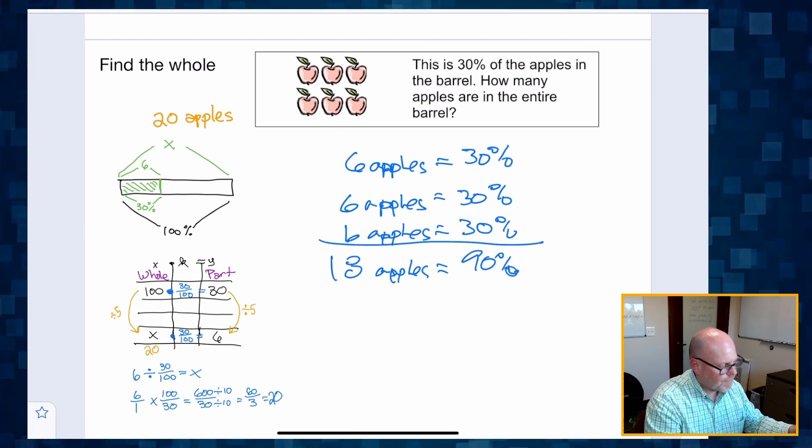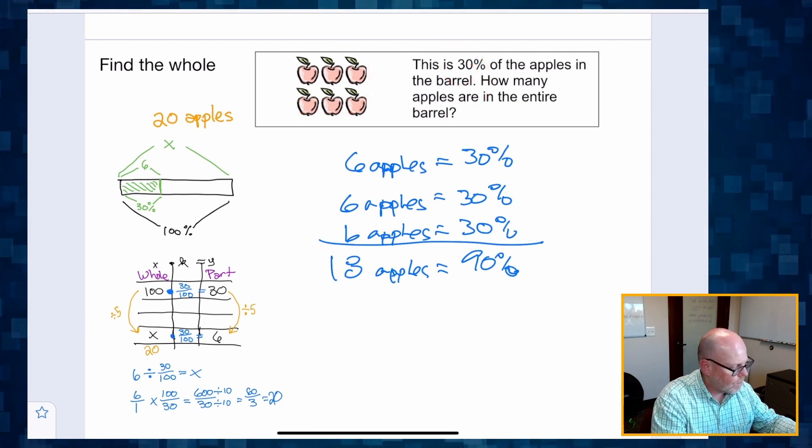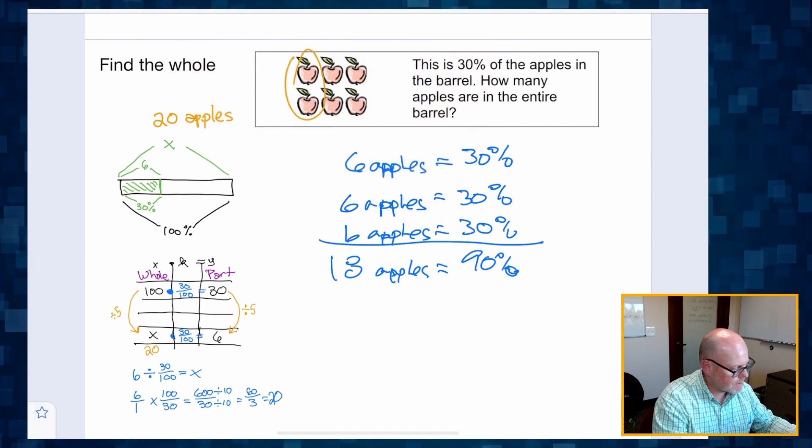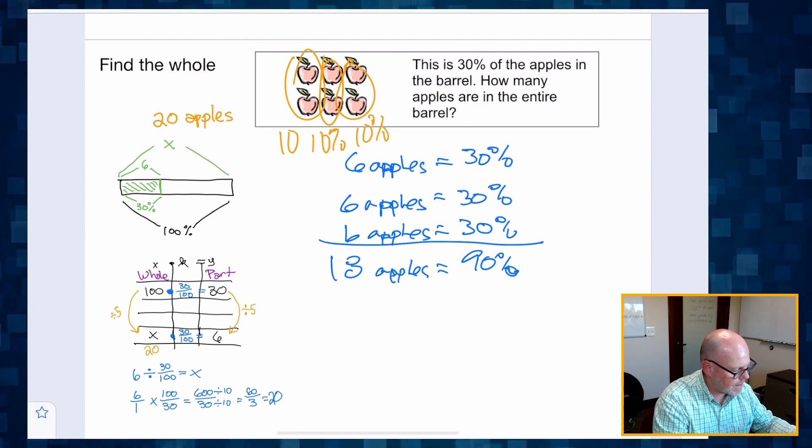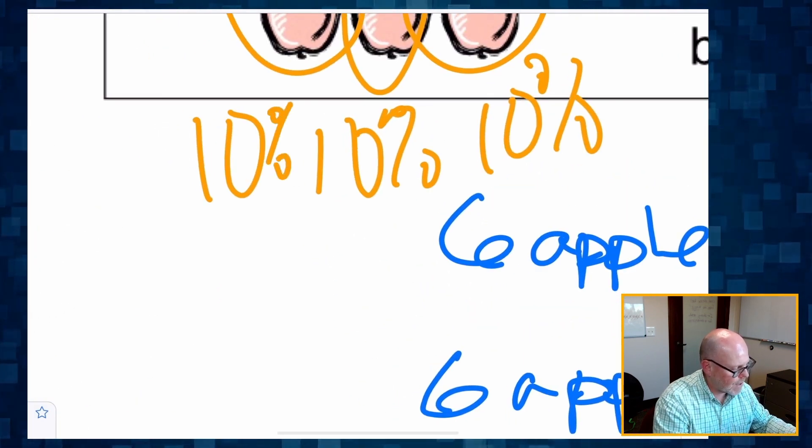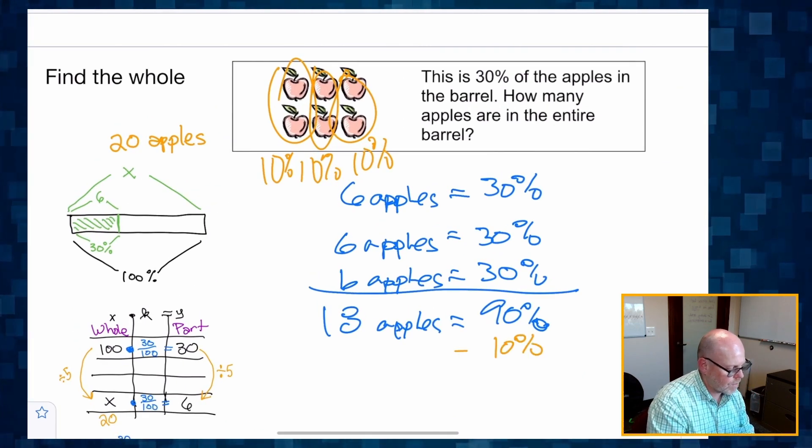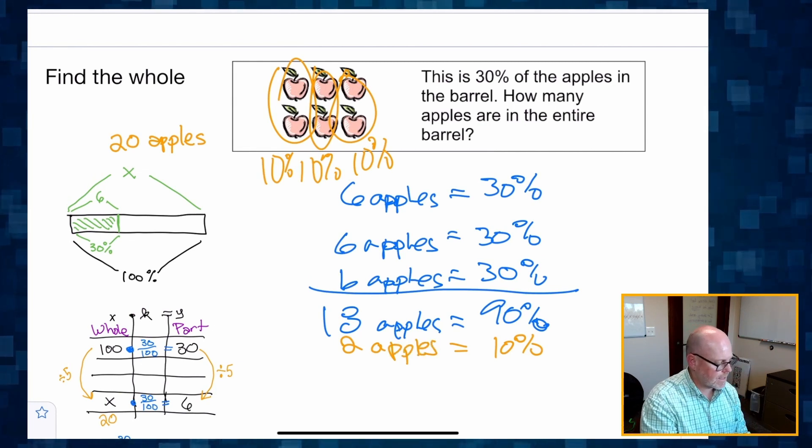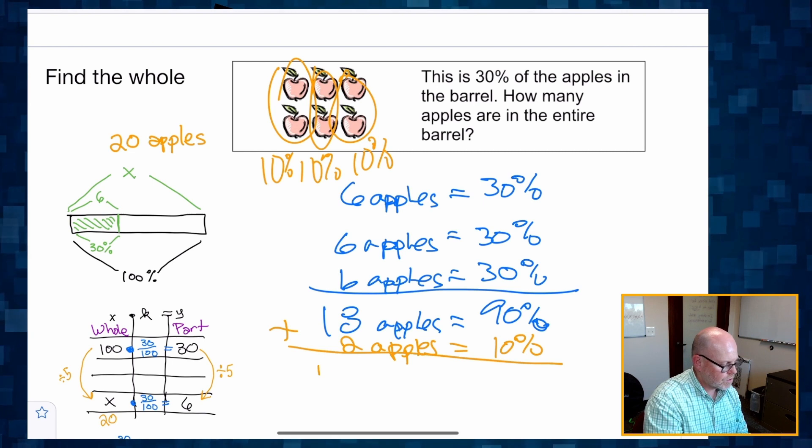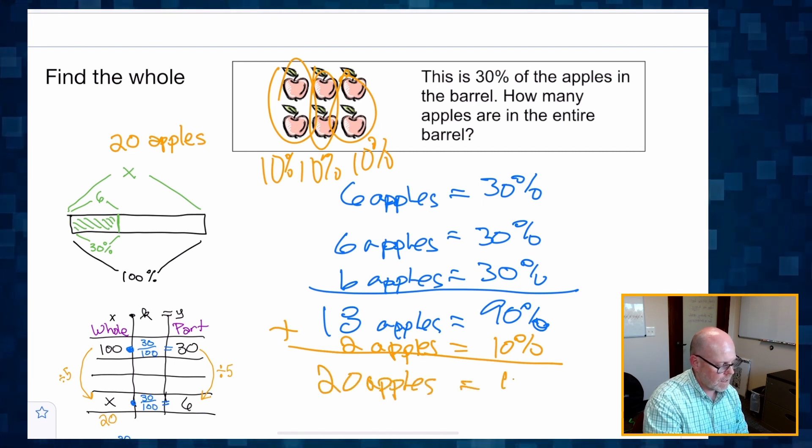And then students might need to say, well, if these six apples represents 30%, well, that means two apples is 10%. Two apples is 10% and two apples is 10%. So, oh, so if two apples is 10%, that's all we need is 10% more, which is two more apples. And now we can see using addition, 20 apples gives me a hundred percent.